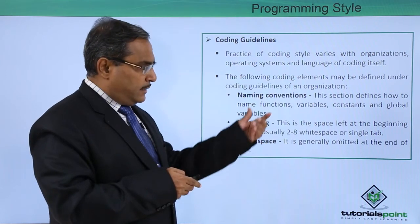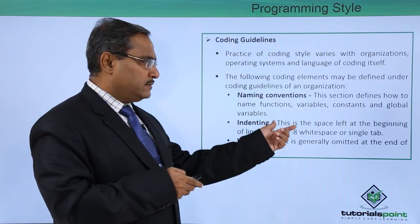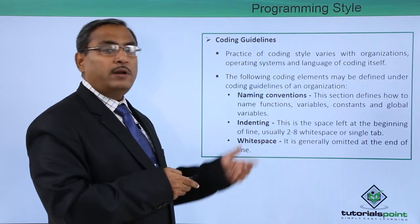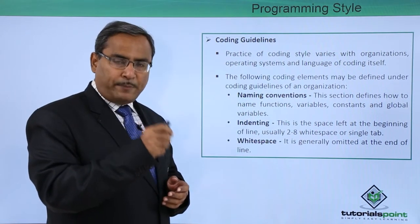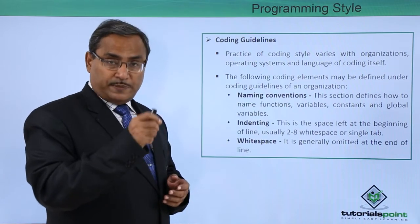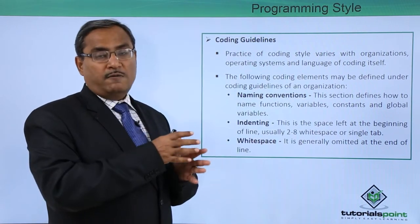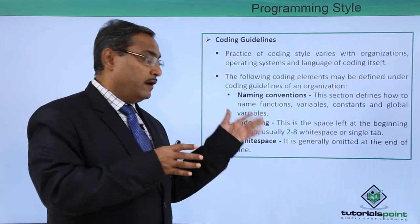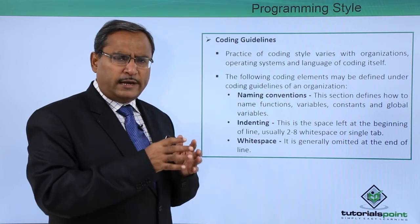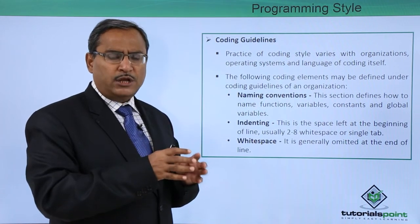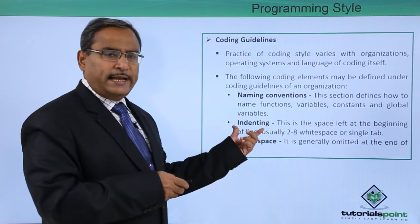Naming conventions define how to name functions, variables, constants, and global variables — where to use small letters, where to use capital letters, where to put a space using an underscore, or how to form variable and function names properly. All these things will have some guidelines and do's and don'ts, so that naming standards should be generic.